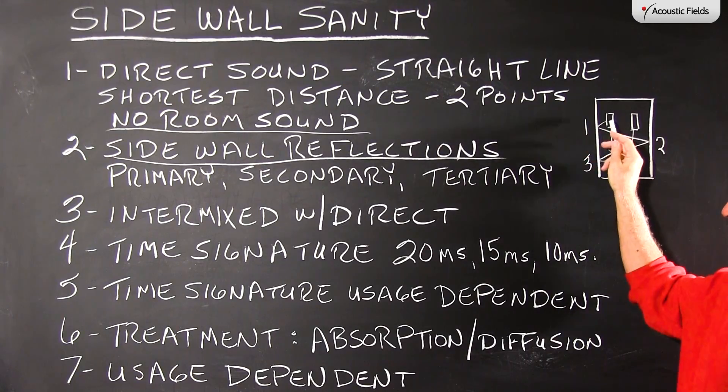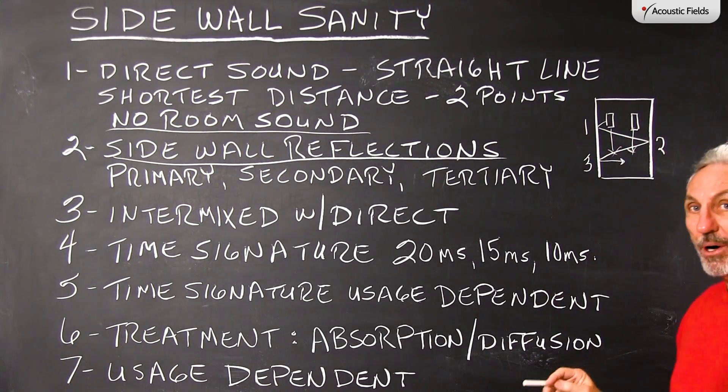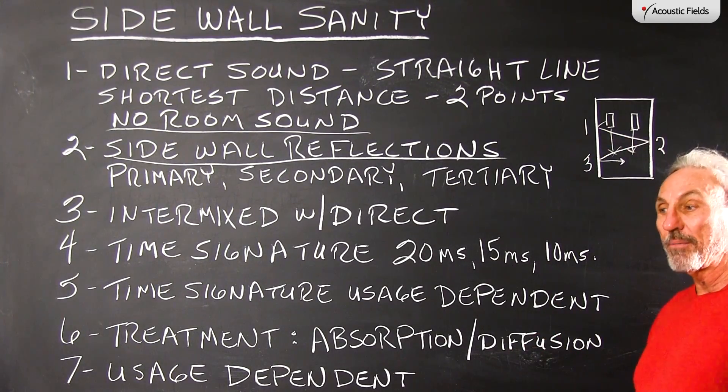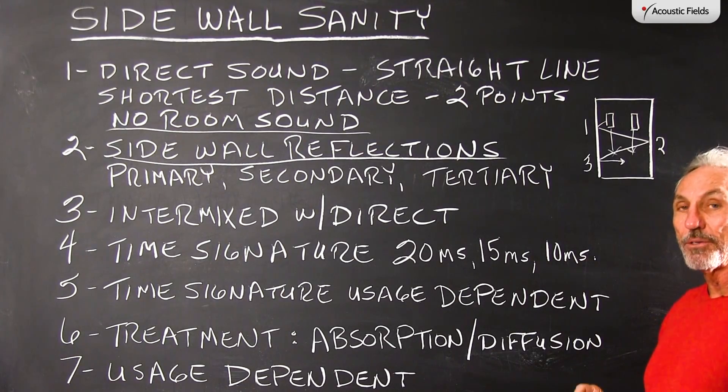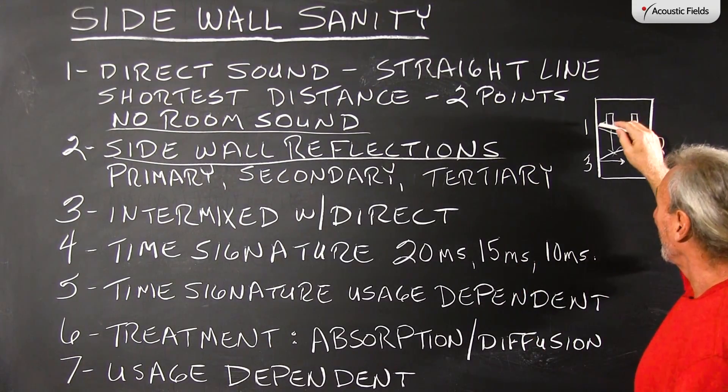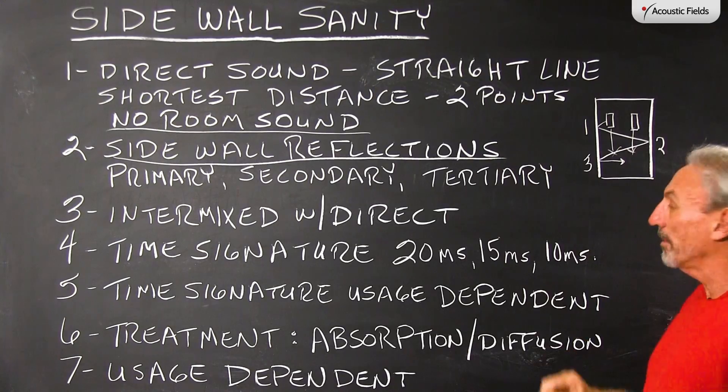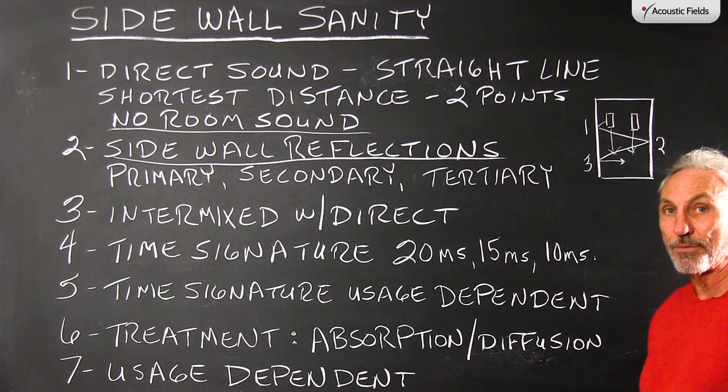Now the sidewall reflections we know have three main parts to them, not just primary. I know a lot of you are understanding the primary reflection which is the first reflection off the closest room boundary surface from your speakers.